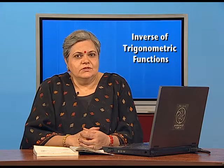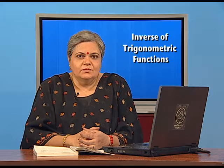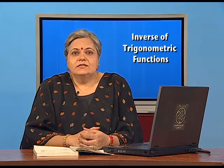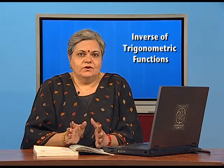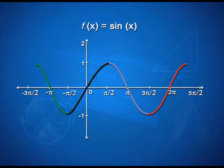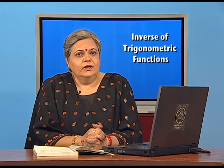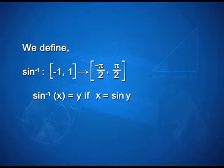The sin function defined over its entire domain of real numbers is not a one-one function. But if we select sub-intervals of the real numbers, the function becomes one-one. The sin function defined between -3π/2 to -π/2, -π/2 to π/2, π/2 to 3π/2, and so on is one-one and onto. So we define sin inverse as a function from [-1, 1] mapped onto [-π/2, π/2], where sin⁻¹(x) = y if x = sin y, and that is the principal value branch.